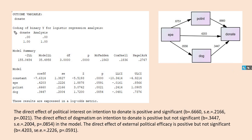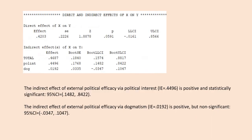The final regression has donate as the dependent variable, again coded for logistic regression, with external political efficacy, political interest, and dogmatism all serving as predictors. All coefficients are positive, but only political interest is statistically significant at the conventional 0.05 level. In the test of indirect effects, the indirect effect through political interest is statistically significant as zero falls outside the 95% confidence interval, while the indirect effect through dogmatism is not significant.